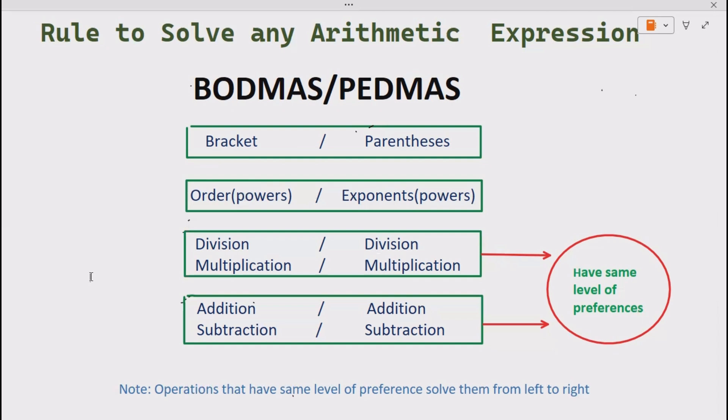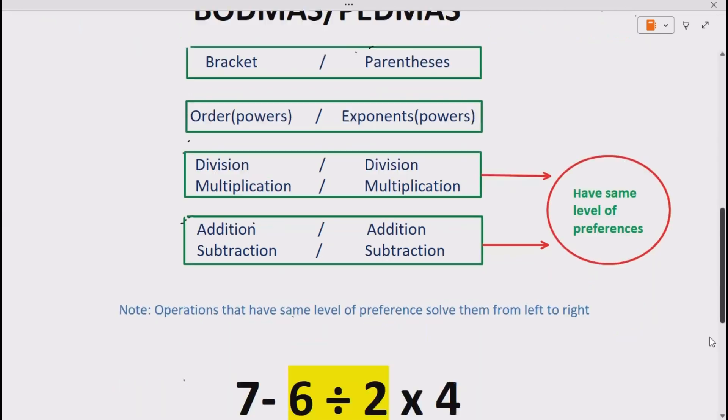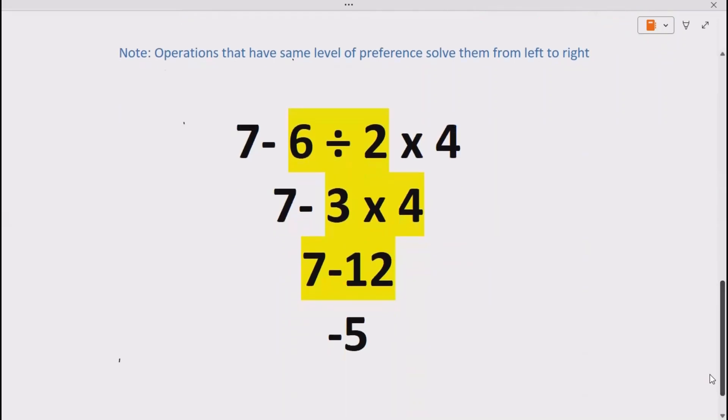Now let's see how we can solve our expression using BODMAS or PEMDAS. So we are given 7 minus 6 divided by 2 multiplied by 4. Since there is no brackets or powers, we don't need to care about them.